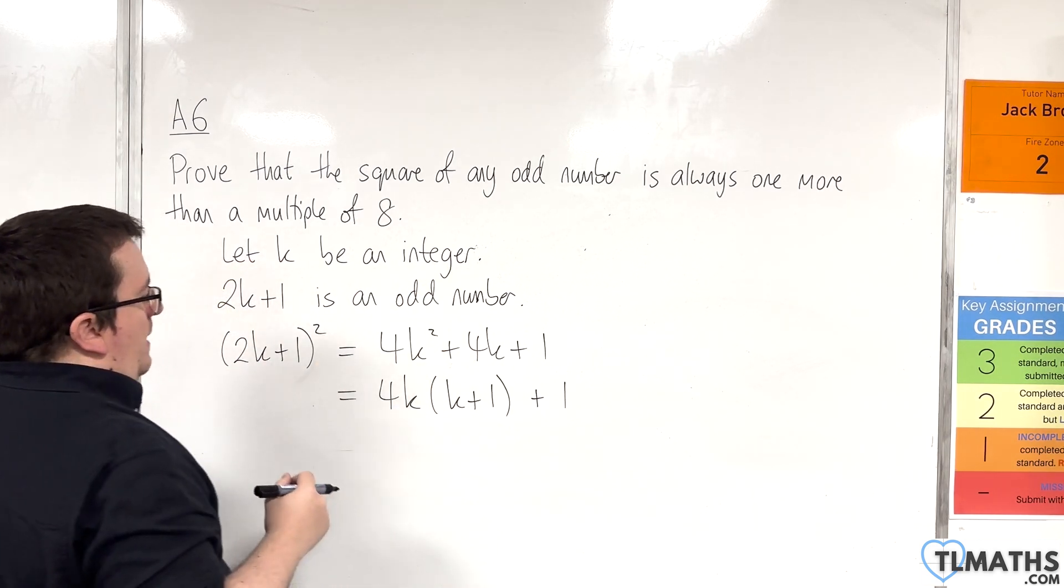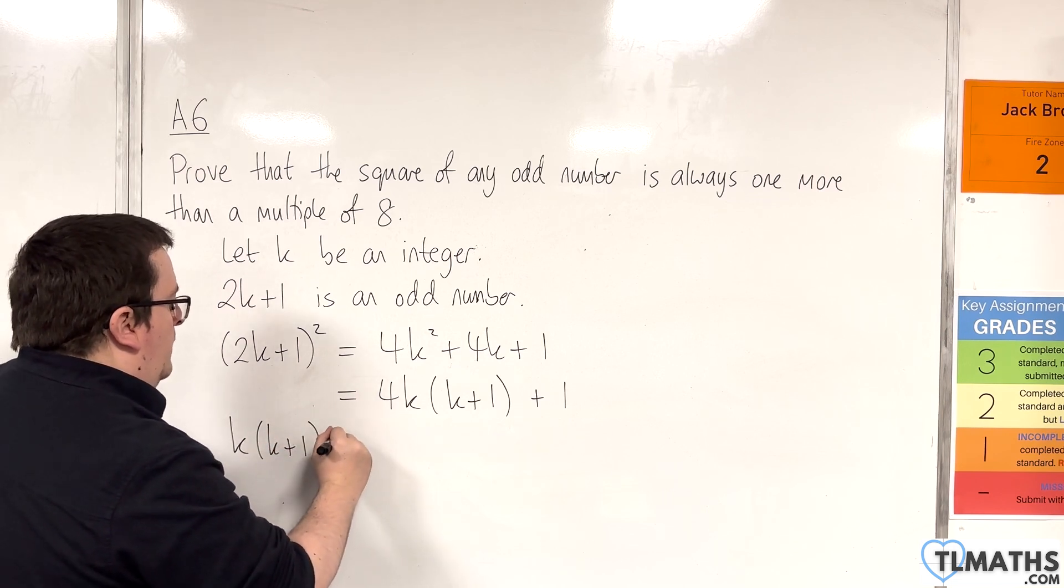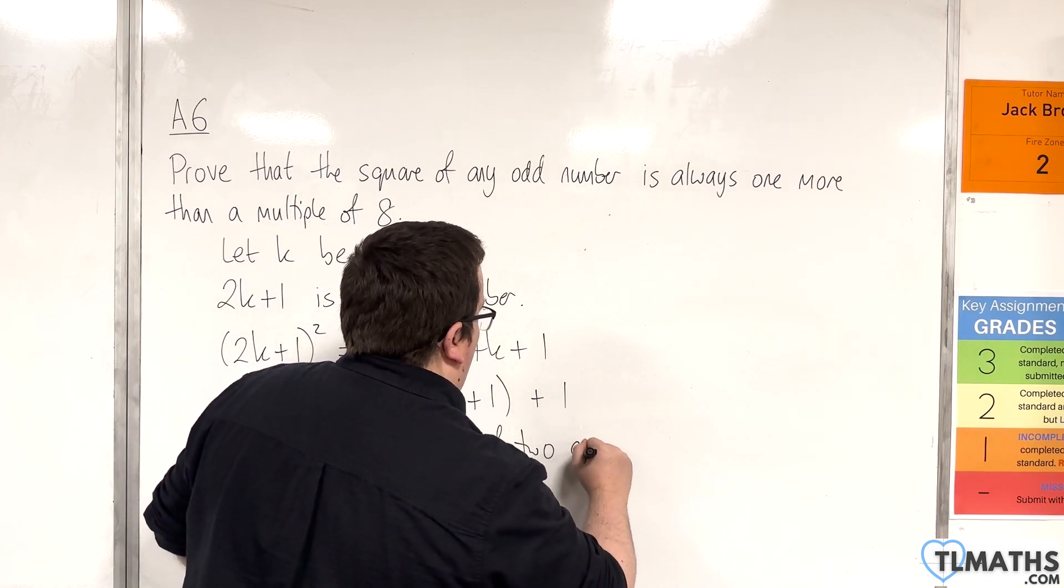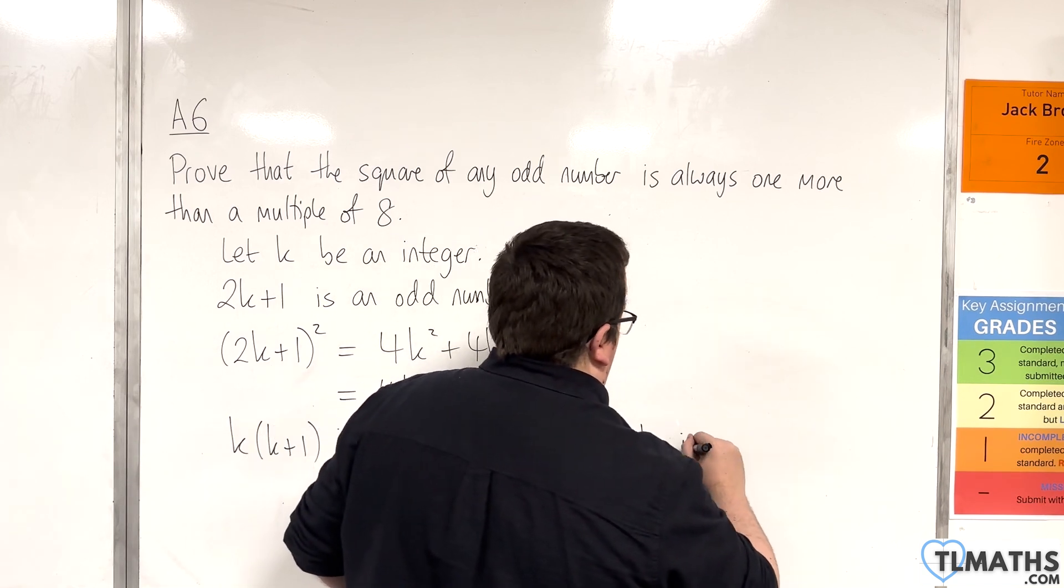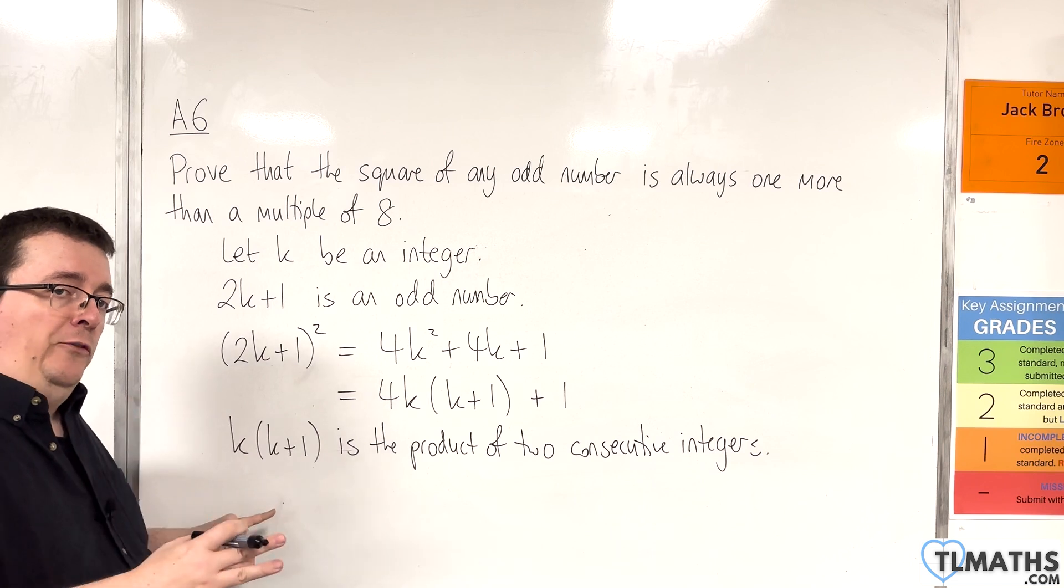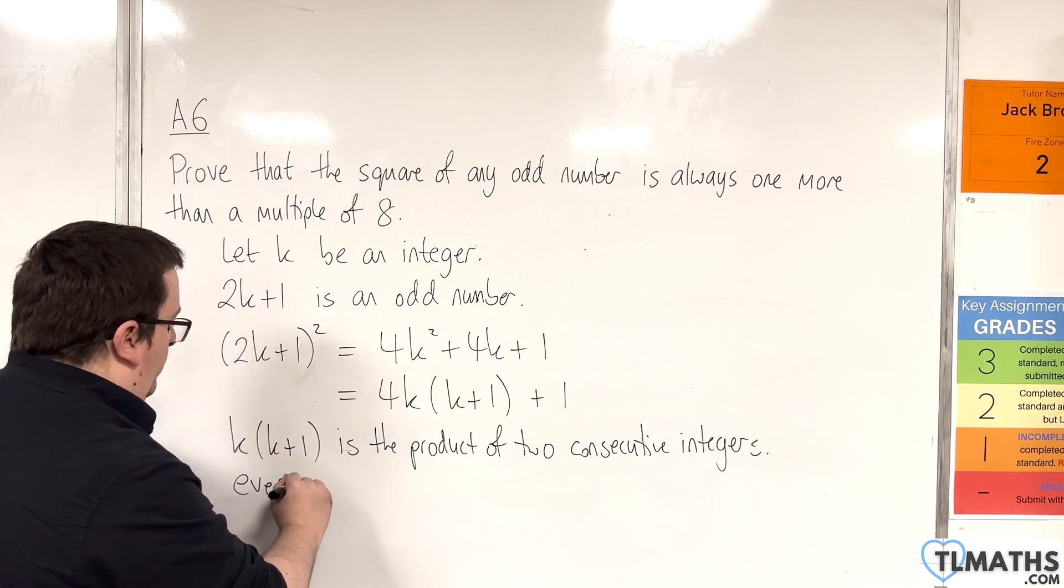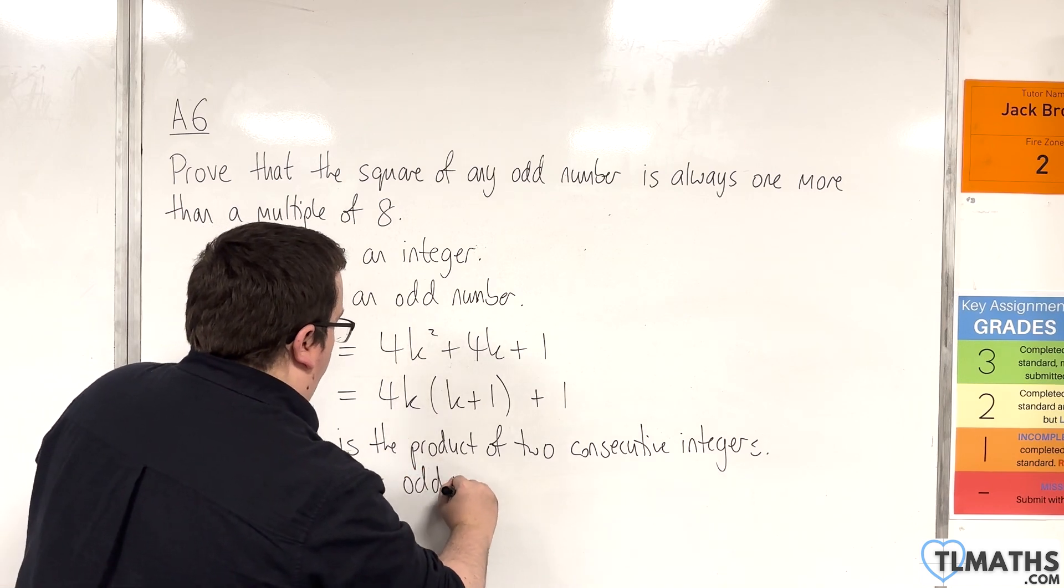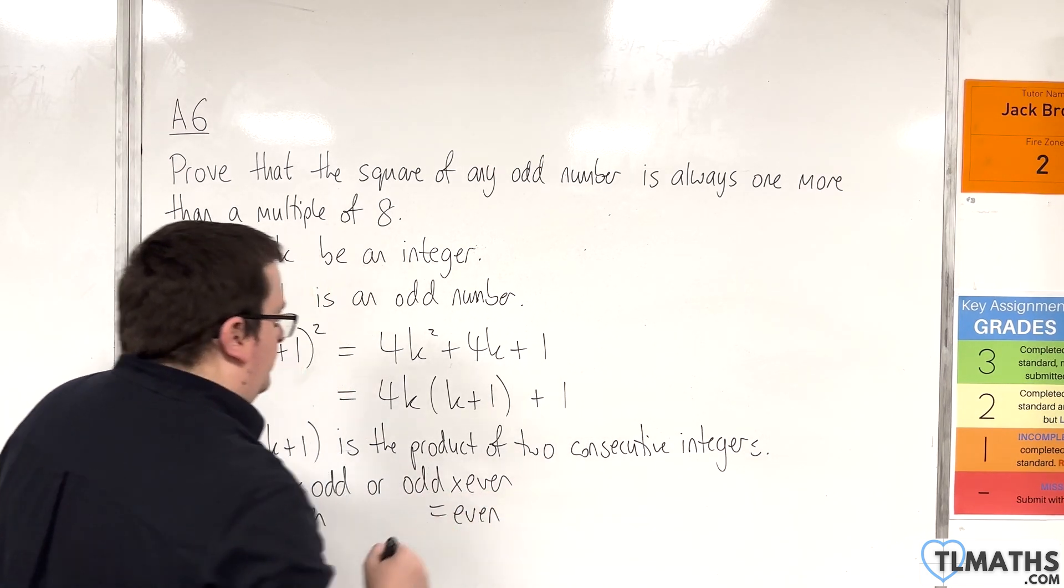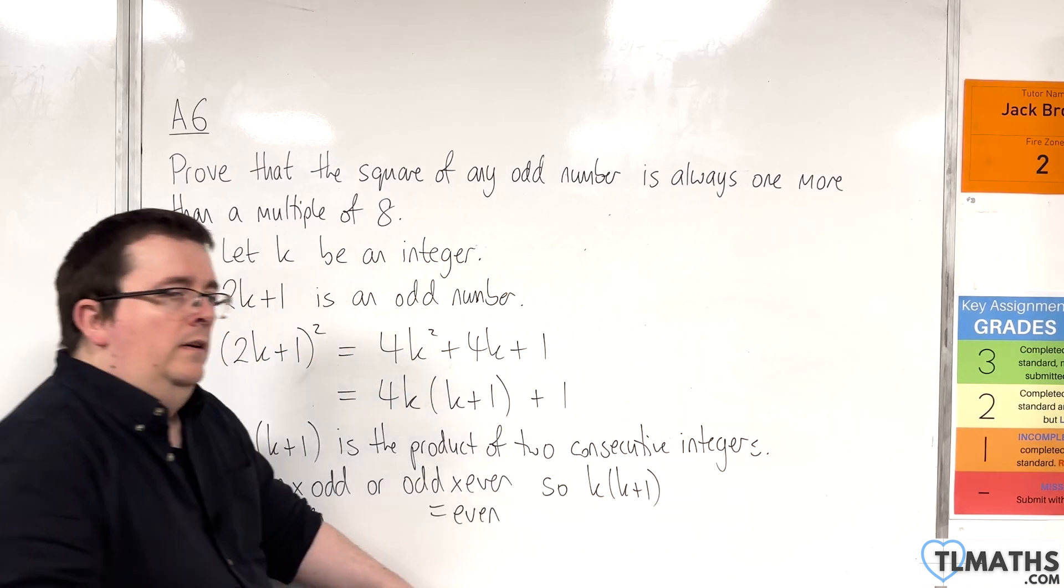Now k is an integer, remember. So if k is an integer, then k times (k + 1) is the product of two consecutive integers. One must be even and the other must be odd. It could be even times odd or odd times even. Either way, these are both even. So k(k + 1) has a factor of 2.